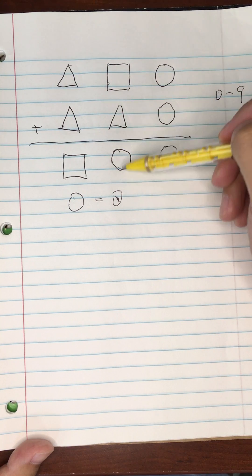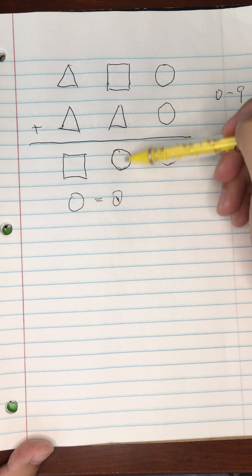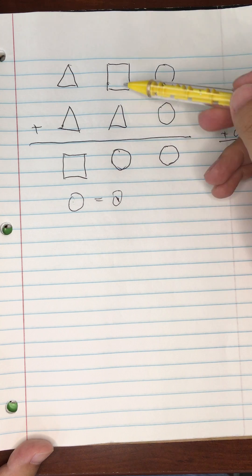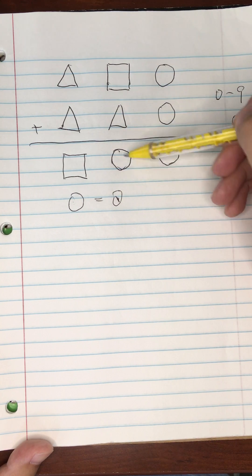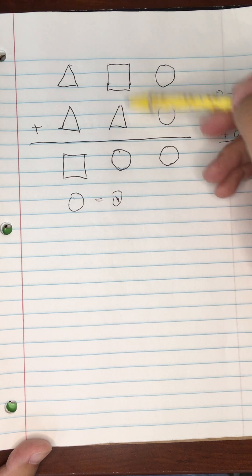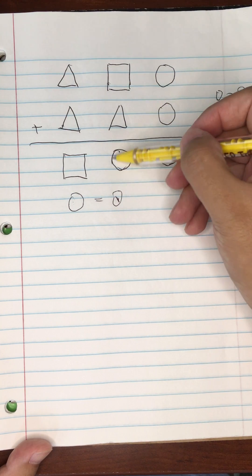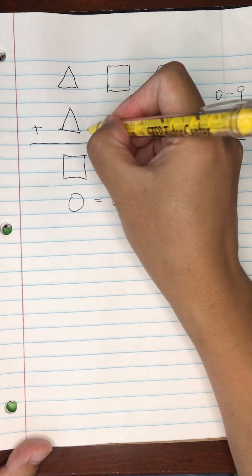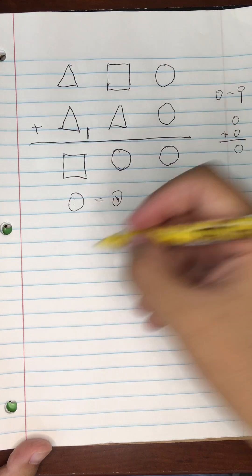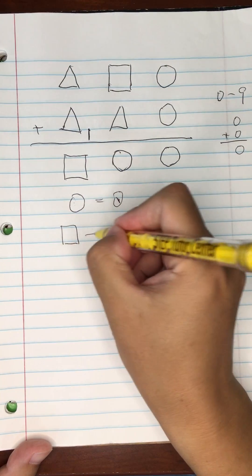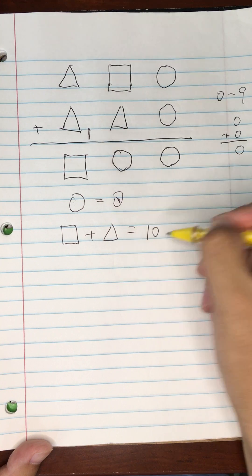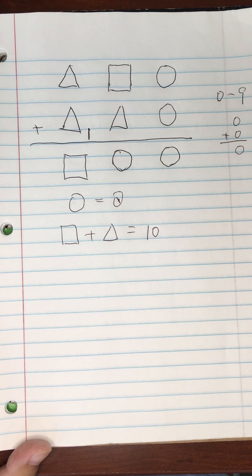Now look at the second column. It's square plus triangle equals zero. That's not possible because we know square and triangle are not zeros anymore. The other possibility is they could add up to be 10, which means this digit is zero and then we have one carry. So square plus triangle equals 10.